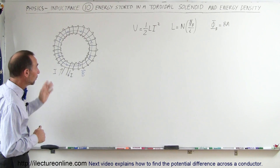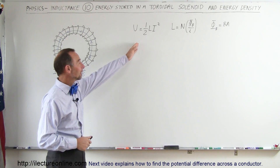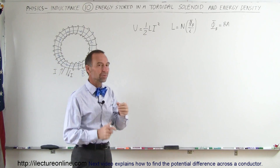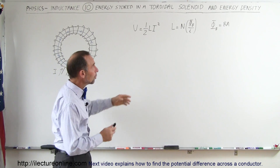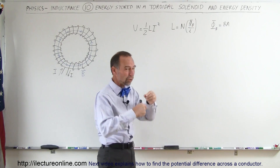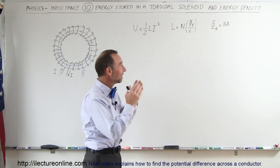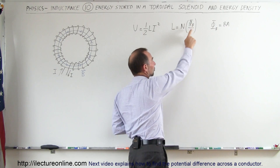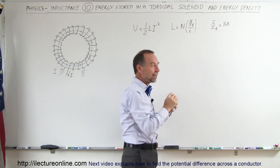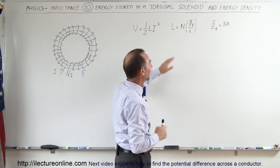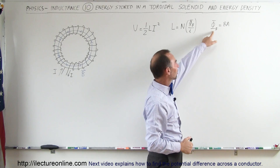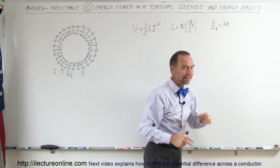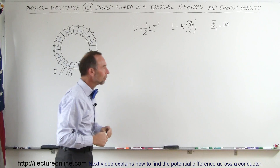Starting out, we know that the energy of a magnetic field is equal to one-half times the self-inductance times the current squared. We also know that the self-inductance is equal to the number of loops times the magnetic flux through the loops, divided by the current that drives that flux. And the magnetic flux is defined as the strength of the magnetic field times the cross-sectional area of that loop.